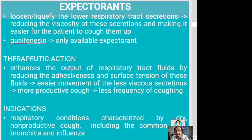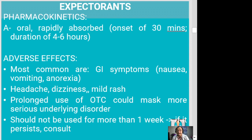Indications for expectorants include respiratory conditions characterized by dry non-productive cough, including the common cold, bronchitis, and influenza. They are generally absorbed orally with an onset of 30 minutes and a duration of four to six hours. Adverse effects include GI symptoms such as nausea, vomiting, and anorexia, as well as headache, dizziness, and mild rashes. Prolonged use of OTC expectorants can mask more serious underlying disorders, so they are not typically used for more than one week.